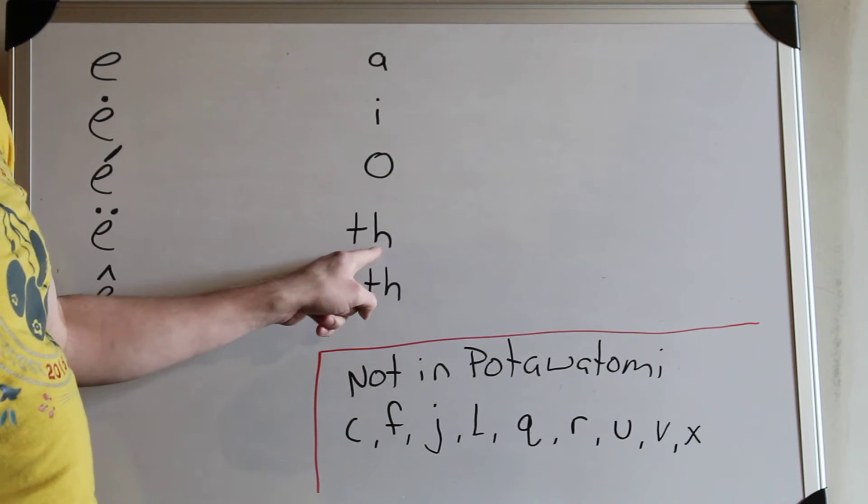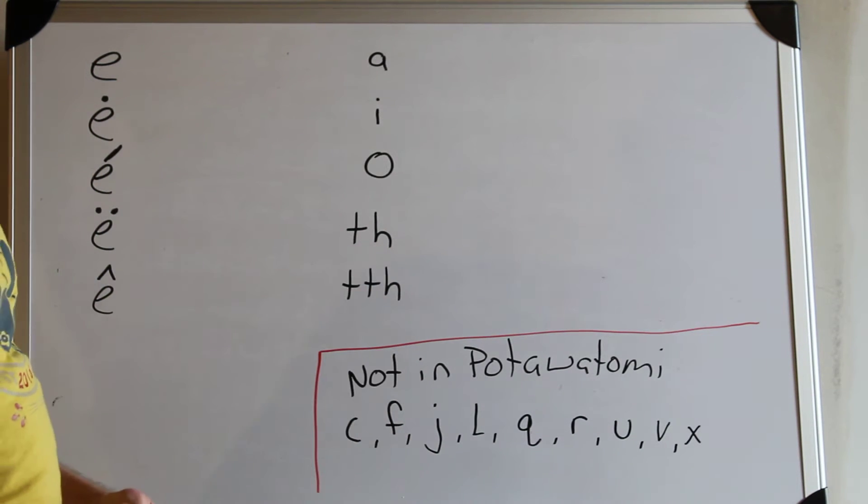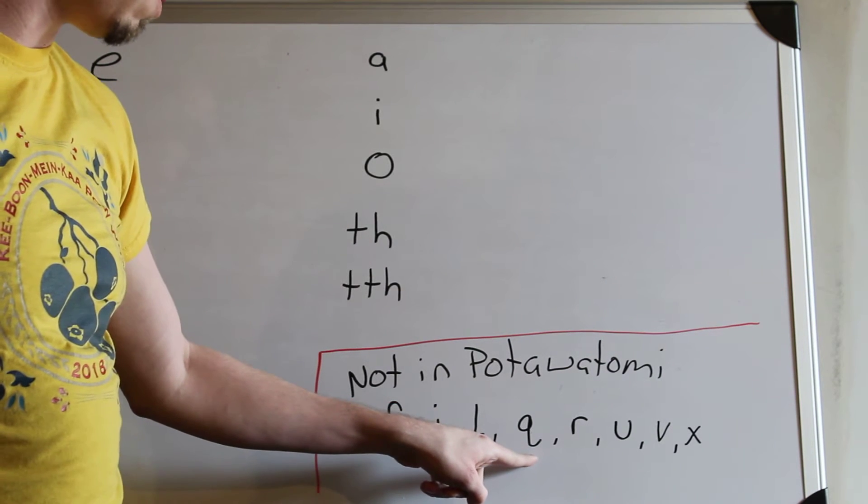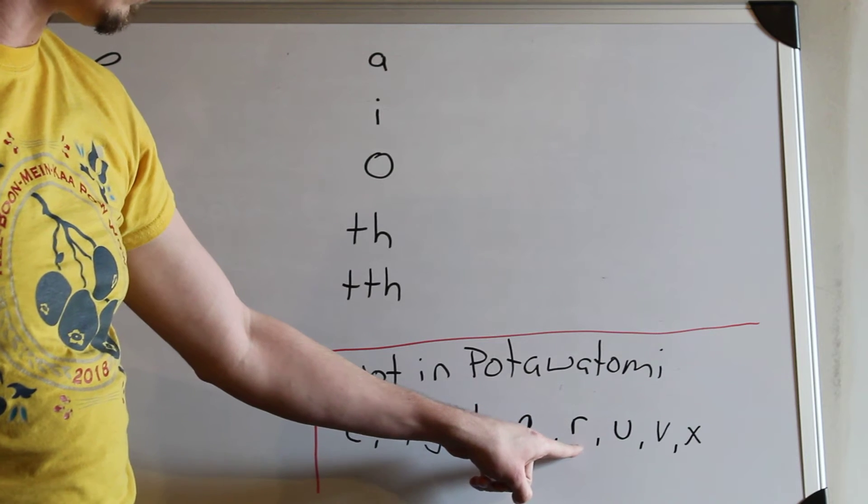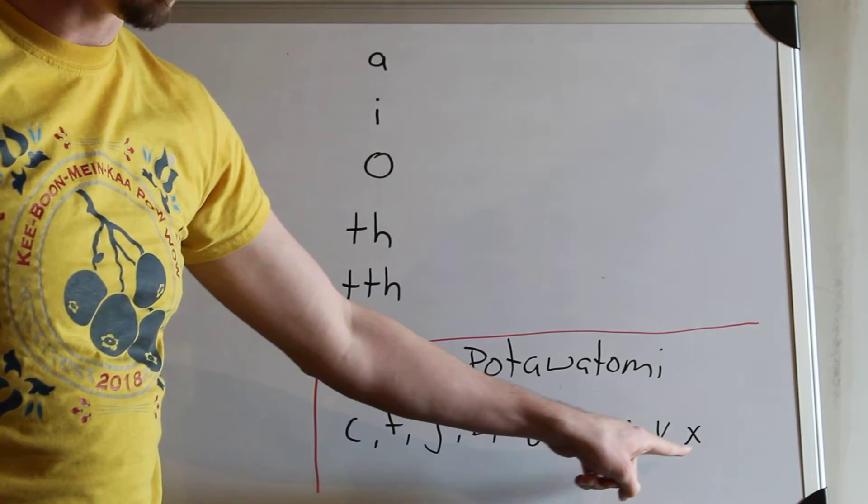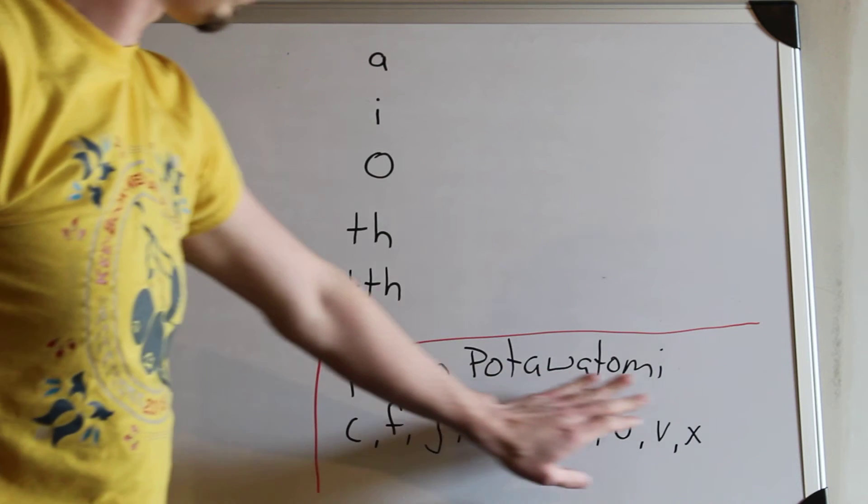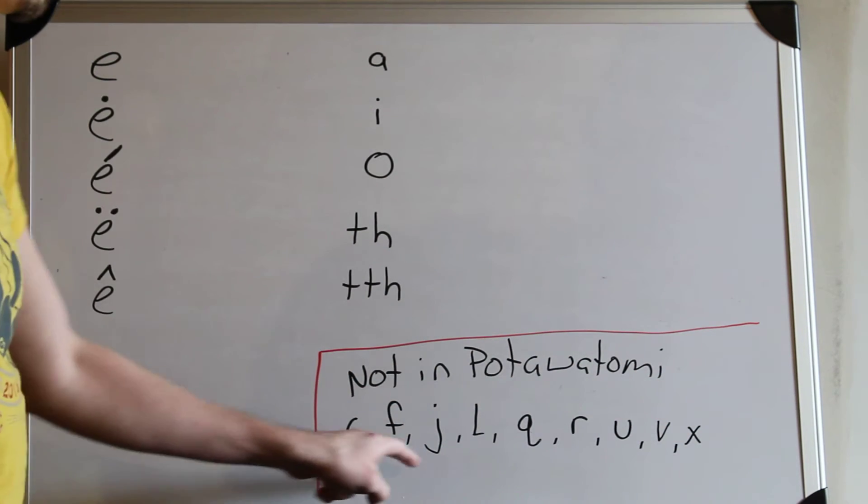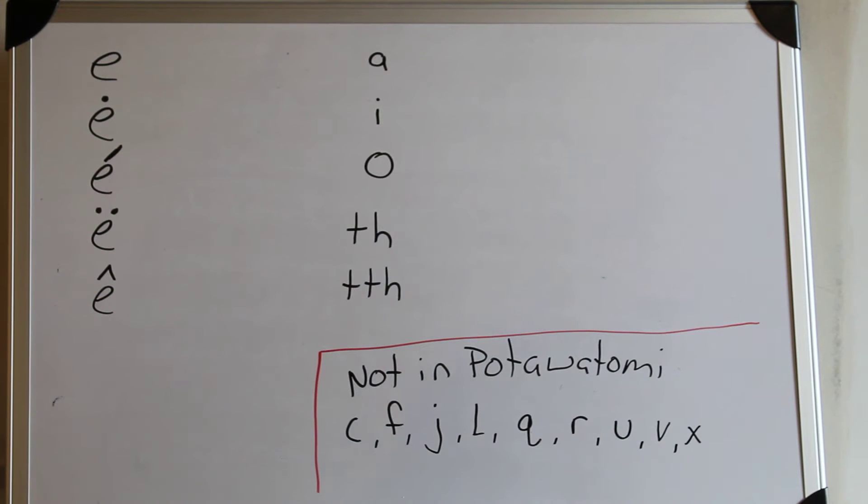The J follows under the TH sound. There's no L's, no Q's, no R, U, V, or X. So all these do not exist in our language. These two come up under a different way of writing.